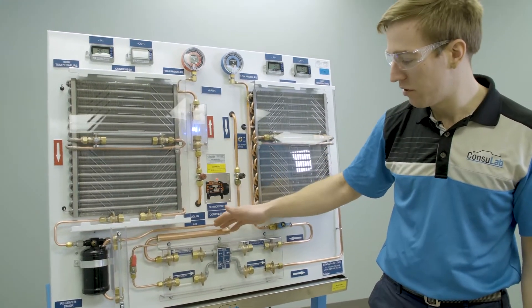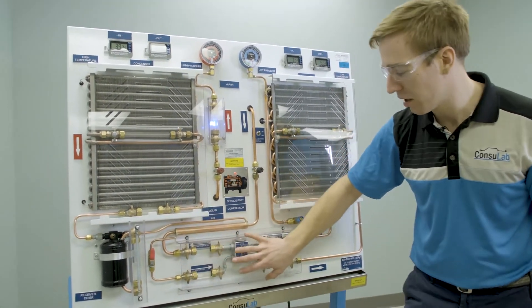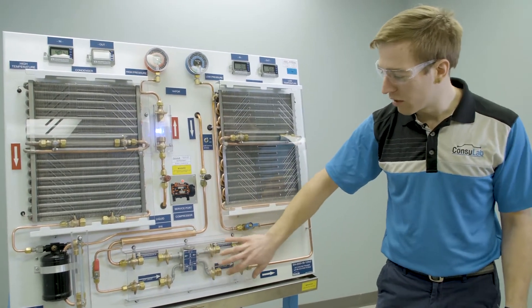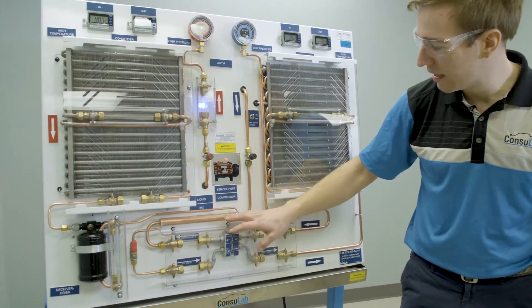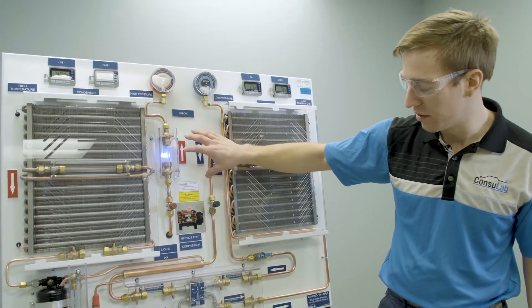We're going to go down through the receiver dryer, we're going to go into this new component the IHX which is going to lead us to the H block, this is our metering device. We're going to get to our evaporator, back through the H block, back through the IHX and we're going to return to the compressor.